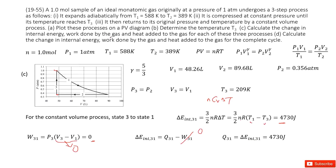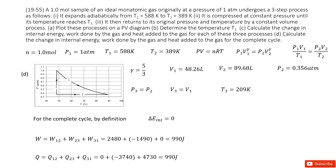The next part asks for the complete cycle. Since this is a complete cycle, by definition the total internal energy change equals 0. The total work done equals W₁₂ plus W₂₃ plus W₃₁ — add them together to get the answer. And the total heat added equals Q₁₂ plus Q₂₃ plus Q₃₁ — add them together to get that answer.